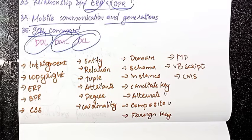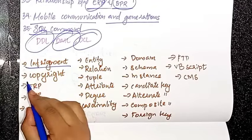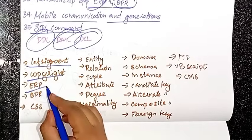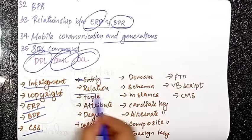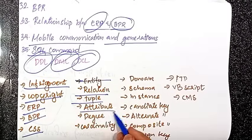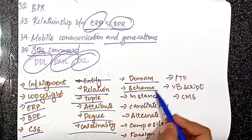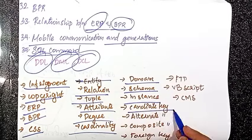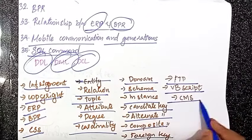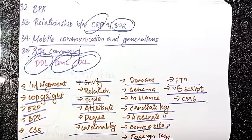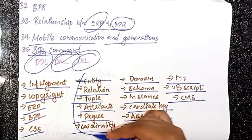We have a few definitions to learn. These include: copyright, ERP, BPR, CSS, Entity, Relation, Attribute, Degree, Cardinality, Domain, Schema, Instance, Candidate Key, Alternate Key, Composite Key, Foreign Key, FTP, VBScript, and CMS.